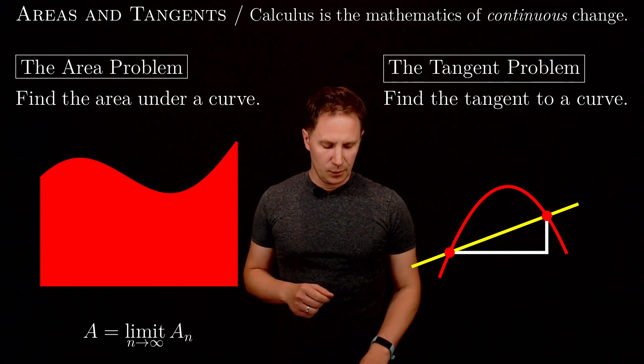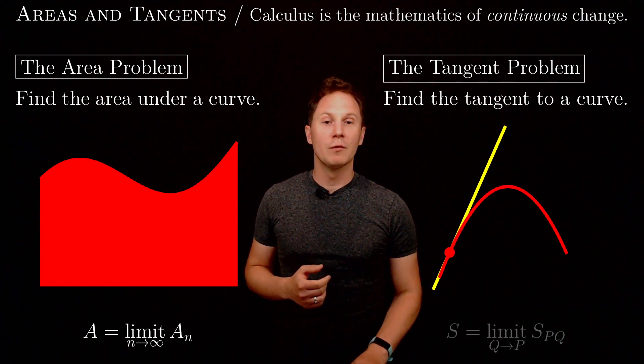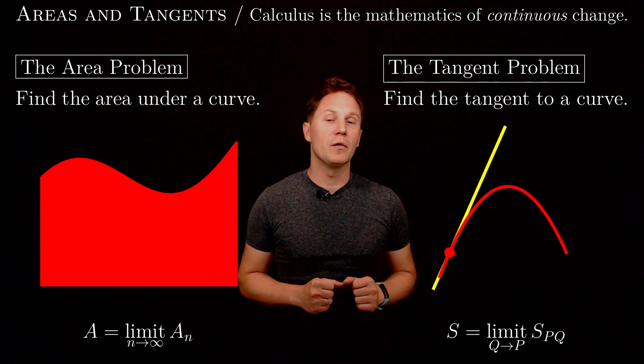Then letting the second point approach the first one in the limit will give us the answer that we were looking for, the exact slope of the tangent line.